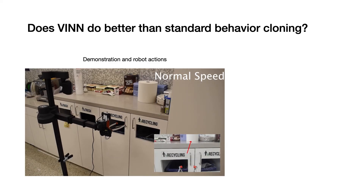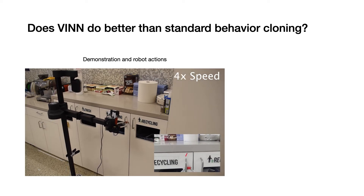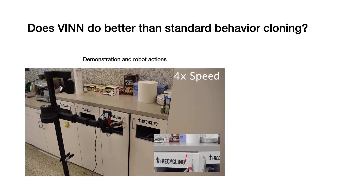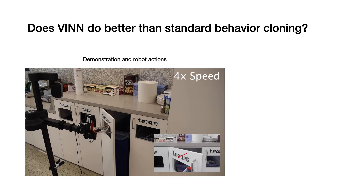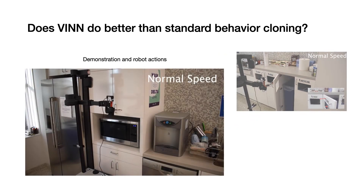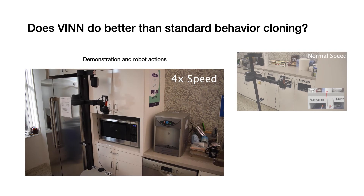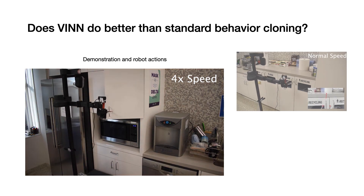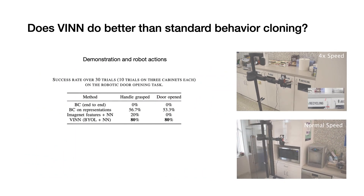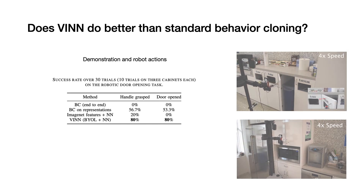We run this experiment on several cabinets. In the inset box on the bottom right, you can see the robot's point of view as well as a predicted action from the model. Our method, using the same policy, works in different cabinets under different lighting conditions. We find that VIN succeeds at a much higher rate than previous methods in opening different cabinet doors over many trials.